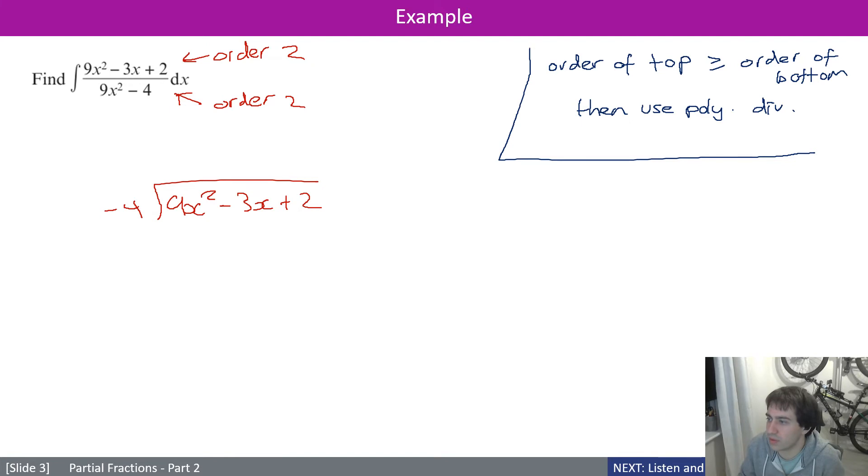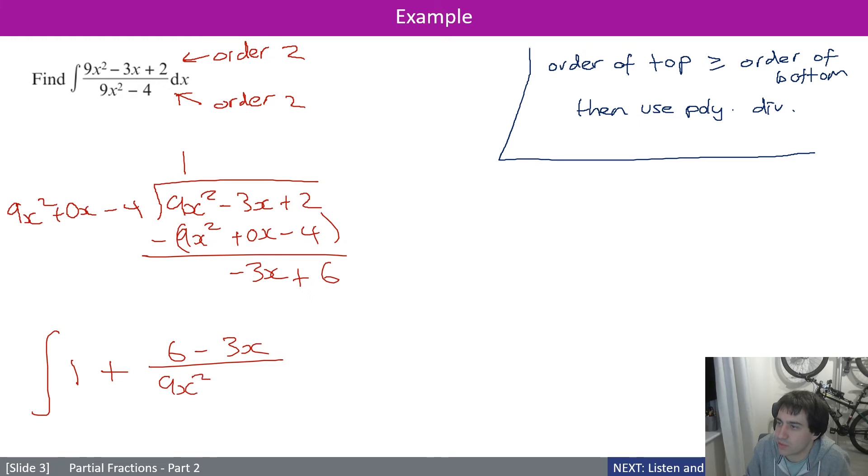In this case, this one's missing a zero. Let's put that in there. 9x^2 + 0x. I'm just going to have 1 here and multiply through. Take that away. What do I end up with? -3x + 6. Therefore, this integral is the same as 1 plus -3x + 6, or 6 - 3x divided by 9x^2 - 4. We've done our polynomial division.